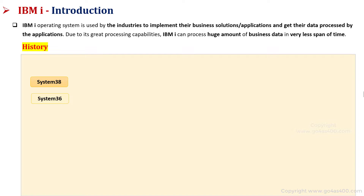System 38 and System 36 were the predecessors of AS400. These systems were best suited for general business and small-scale business. System 38, launched in 1978, was the first mid-range system to have an integrated relational database. In 1988, IBM launched AS400, which was best suited for small and mid-level industries.